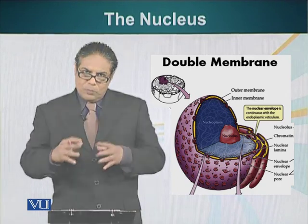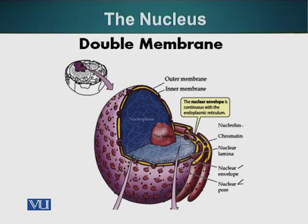The place where ribosomes are assembled is called the nucleolus. Here you can see the little pores in the nucleus. Another important feature is that the nuclear membrane is continuous with other membranes of the cell, which we will talk about later — those are the endoplasmic reticulum. Inside the nucleus there is a structural element, a type of skeletal element called the nuclear lamina, which maintains the specific shape of the nucleus.